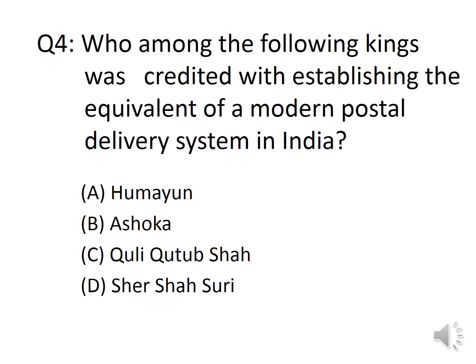Question 4: Who among the following kings was credited with establishing the equivalent of a modern postal delivery system in India? Options: A. Humayun, B. Ashoka, C. Kuli Kutubshah, D. Sher Shah Suri. The answer is Option D, Sher Shah Suri.